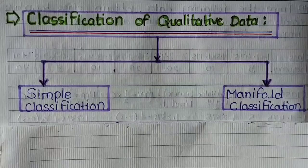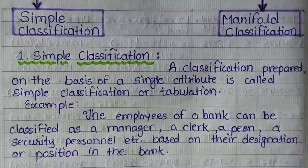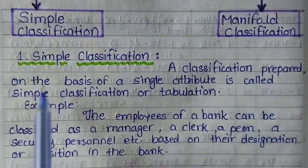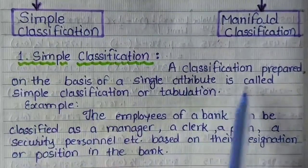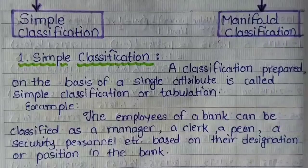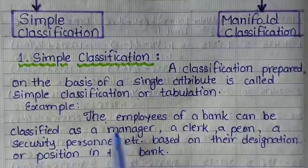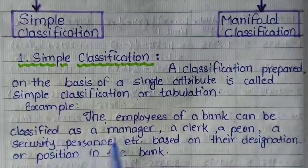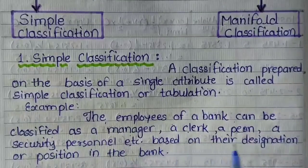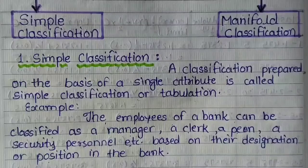Now what is simple classification and manifold classification? We will understand. First of all, we will understand simple classification. A classification prepared on the basis of a single attribute is called simple classification or tabulation. यानि जिसमें केवल एक ही attribute हो, ऐसे classification को हम simple classification कहते हैं. Example: the employees of a bank can be classified as a manager, a clerk, a peon, a security personnel, etc., based on their designation or position in the bank.